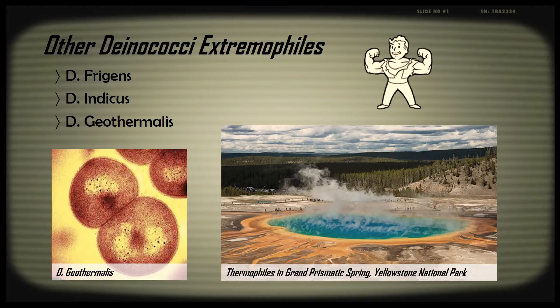D. indicus is another, particularly resistant to arsenic, and D. geothermalis, which optimal growth temperature is between 45 and 50 degrees Celsius, or 113 to 122 degrees Fahrenheit. It is highly resistant to gamma radiation, and is currently being tested among other extremophiles populations on the International Space Station in space and Mars.